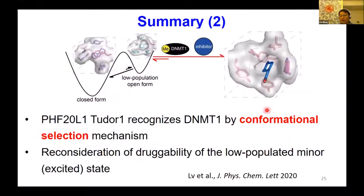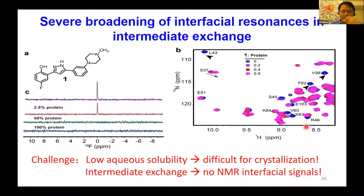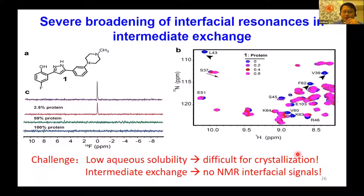As a summary, we demonstrated that PHF20L1 Tudor domain recognizes EMT1 using a conformational selection mechanism. This also points out that for some targets, even if in the apo-form they do not show any binding properties, they may have a low-population binding-competent state. We recently developed a small molecule compound using structure-activity studies. Unfortunately there is low solubility making it difficult to crystallize, and because of intermediate affinity it is in intermediate exchange, so we cannot observe NMR signals.